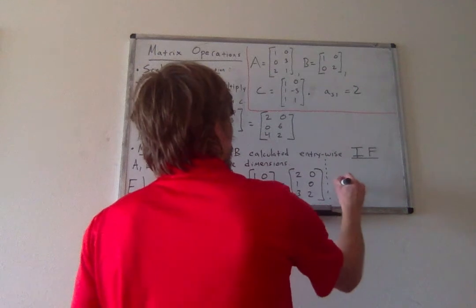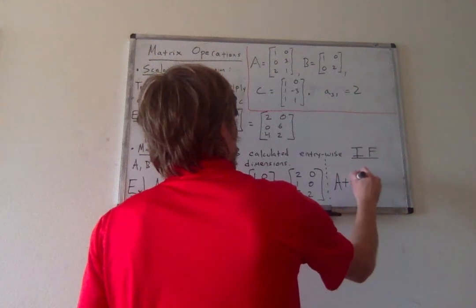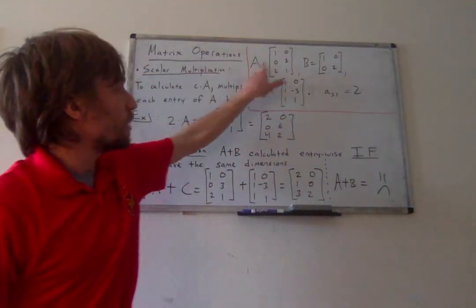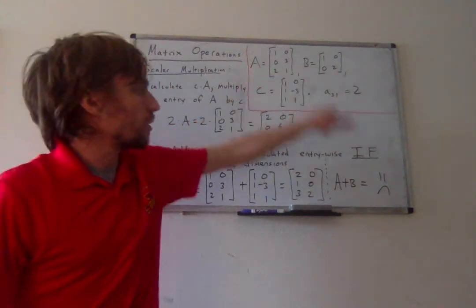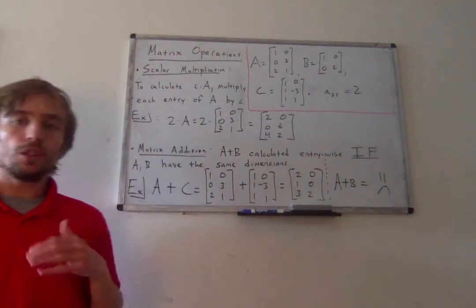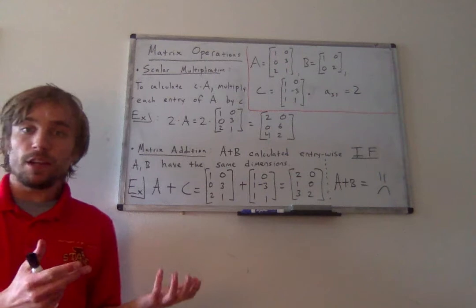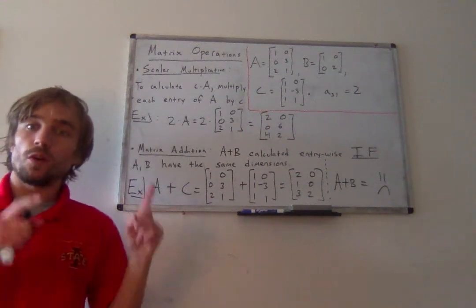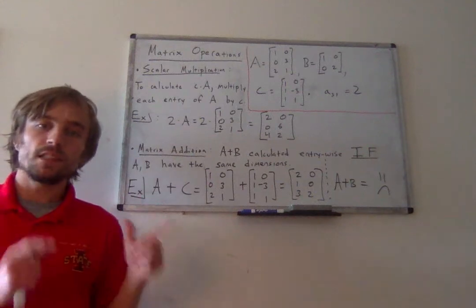But notice here, we actually could not add this matrix A plus B because their dimensions aren't the same. So scalar multiplication, just multiply each entry by that number. Matrix addition, just add entry-wise only if the matrices have the exact same dimensions.